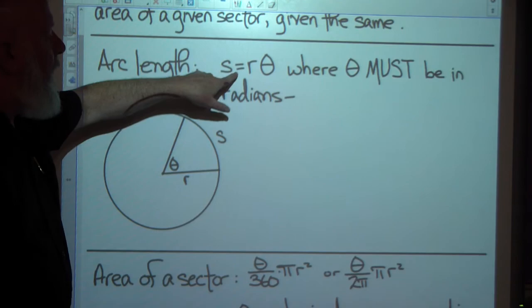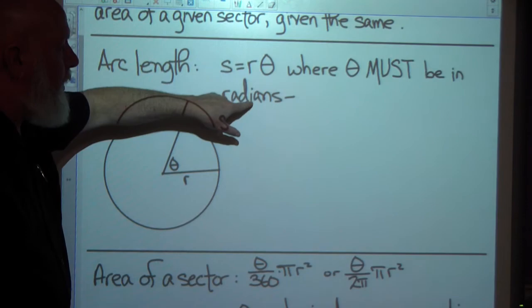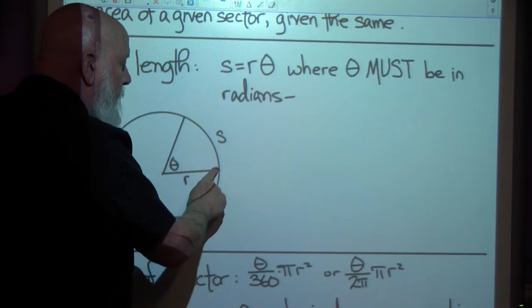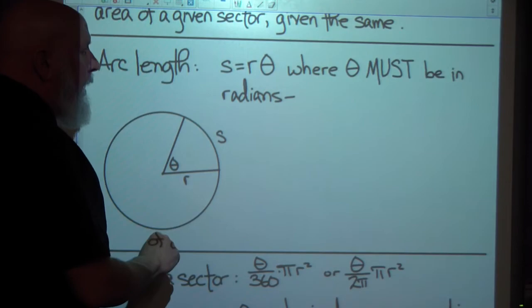The arc length, the length of this arc is R theta as long as theta is in radians. So if you are given degrees and asked for the length of an arc, you want to change it to radians, and then use this formula. The length of the arc, S, is equal to R, the length of the radius, times the measure of the central angle, theta, in radians.